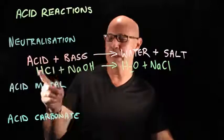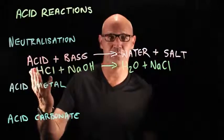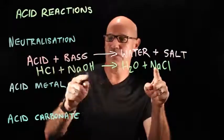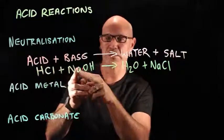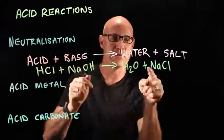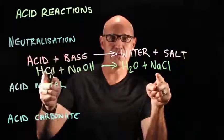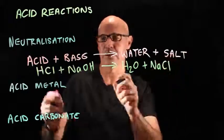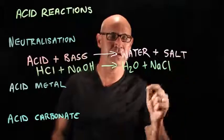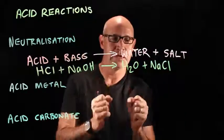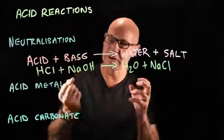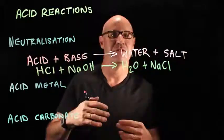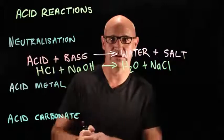But if we had a different acid — for example, sulphuric acid — so if it was sulphuric acid plus sodium hydroxide, we would have sodium sulphate as our salt. So it depends on what acid and base are involved. A salt is an ionic compound made of a positive and a negative ion — a cation and an anion — that occurs in a neutralisation reaction.